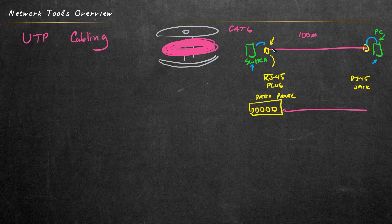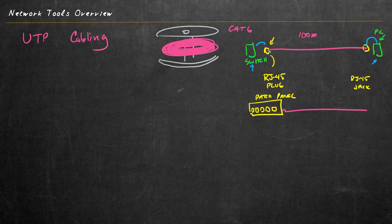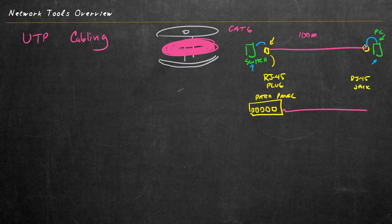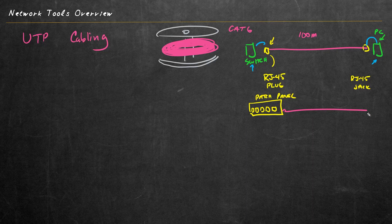We need tools to cut the cable. We need tools to go ahead and strip the plastic off the end of the cable. We need tools to crimp the RJ45 plug onto those eight wires. Or if we're terminating it with an RJ45 jack, we need tools to go ahead and make those connections as well.